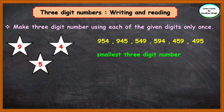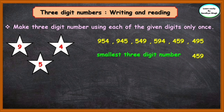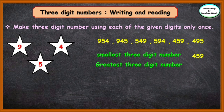Now, let us find the smallest three-digit number from these numbers. To form the smallest three-digit number, arrange the given digits in increasing order. Here 4 is smaller than 5, and 5 is smaller than 9. So the smallest three-digit number will be 459. Now, to find the greatest three-digit number, arrange the digits in decreasing order. Here 9 is greater than 5, and 5 is greater than 4. So the greatest three-digit number will be 954.